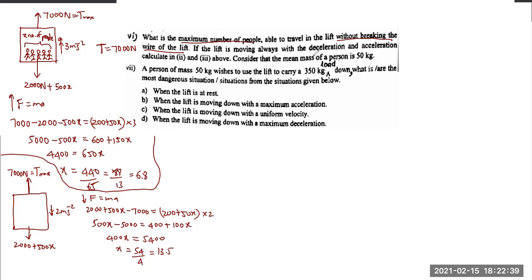You must choose the smallest value as the answer, so the maximum number of people able to travel in the lift without breaking the wire is 6 people. You can put 13 people only when going down, but putting 6 is always safe. To get full marks you must state that the lift can accommodate only 6 people without breaking the wire.